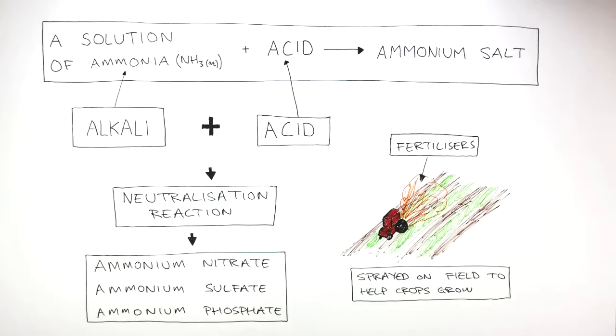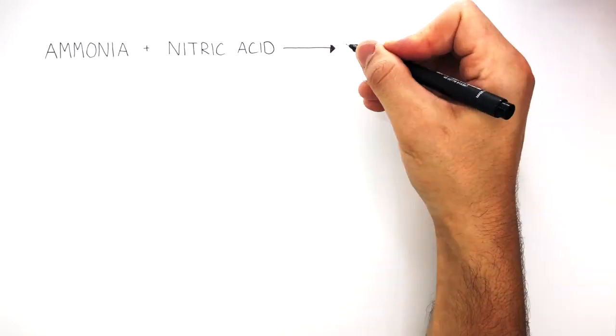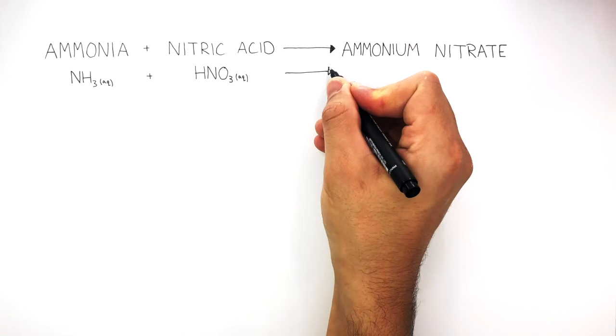You need to know how each ammonium salt is made using ammonia. For example, ammonia can react with nitric acid to form ammonium nitrate. And this is the balanced symbol equation.